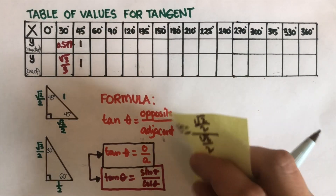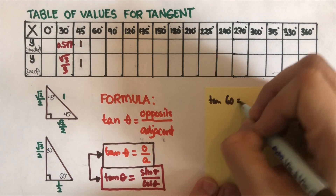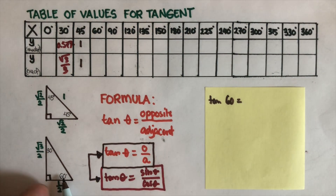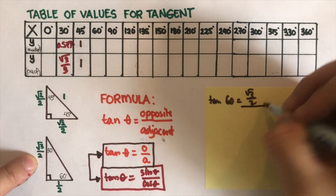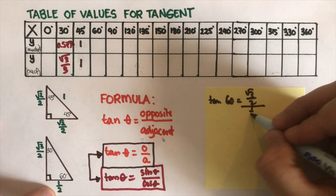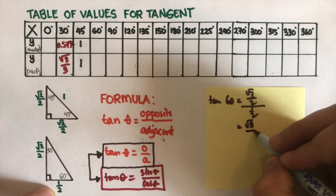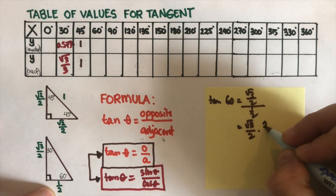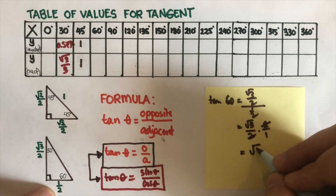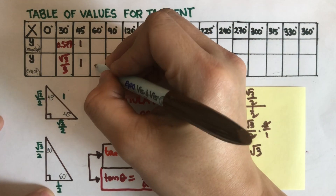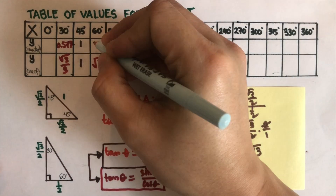Now let's move on to tangent 60. For 60, tangent 60 equals opposite over adjacent, which is square root of three over two divided by one half. We flip the bottom and multiply across: square root of three over two times two over one. We cross out the twos, so tangent 60 equals square root of three. This is the exact value.